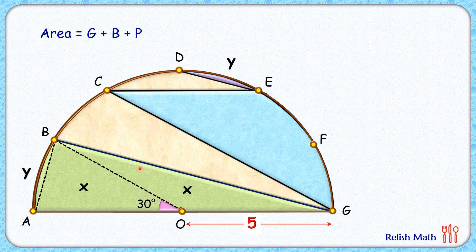Out of which, green plus purple area is x plus x plus y plus y, or two times x plus y. But if we look carefully here, x plus y is nothing but the area of this sector with angle 30 degrees. Let's put the formula here: that's 30 by 360 into π r squared.